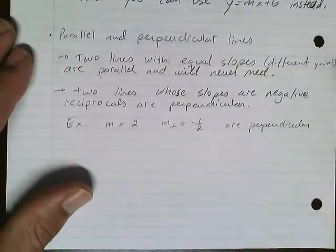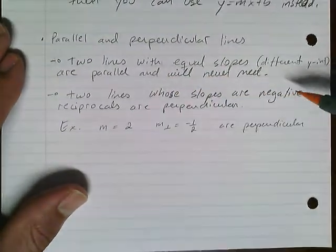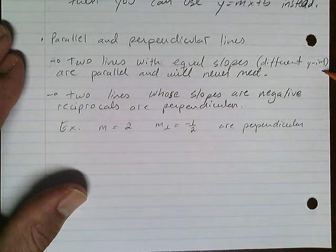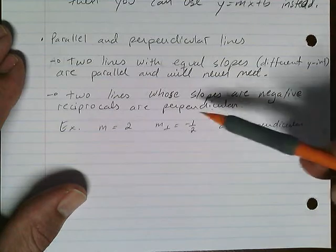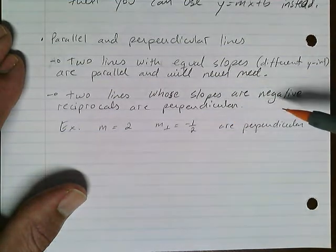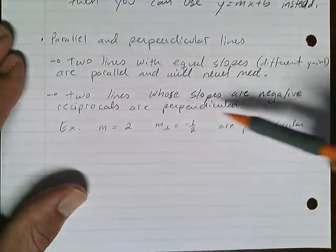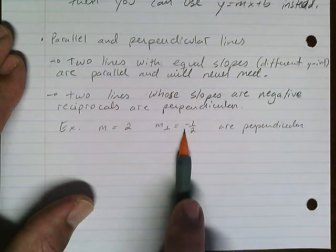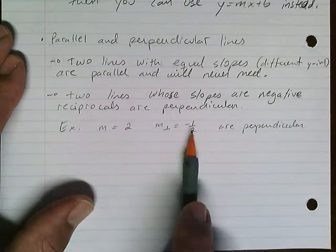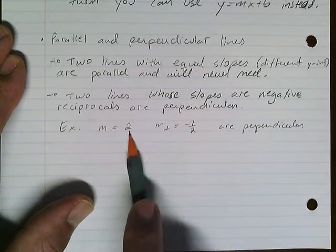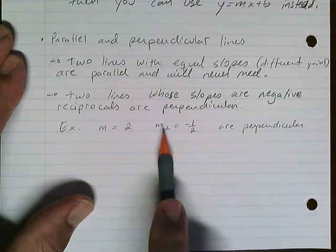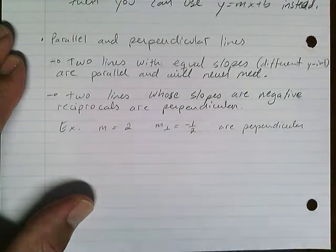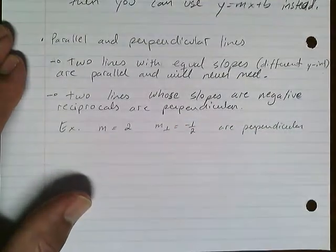Parallel and perpendicular lines: two lines with equal slopes but different y-intercepts are parallel and will never meet. Two lines whose slopes are negative reciprocals are perpendicular. If one line has a slope of 2, the other one has it flipped and changed sign - we would call these two lines perpendicular. If you do a parallel slope, you just do two lines that run alongside each other.